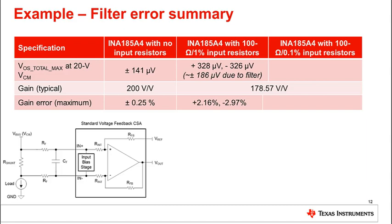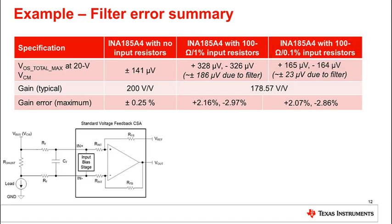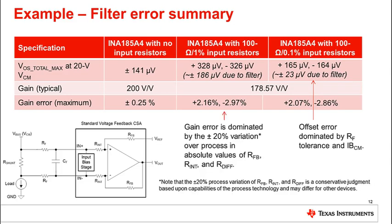Here is an overview of the total error. If we repeat the previous analysis but with input filter resistors of 0.1% tolerance, we see a dramatic improvement in the offset error but a small improvement in the gain error. This is because offset error is dominated by RF tolerance and the level of common mode input bias current. Gain error is dominated by the process variation of the internal resistor's absolute values.